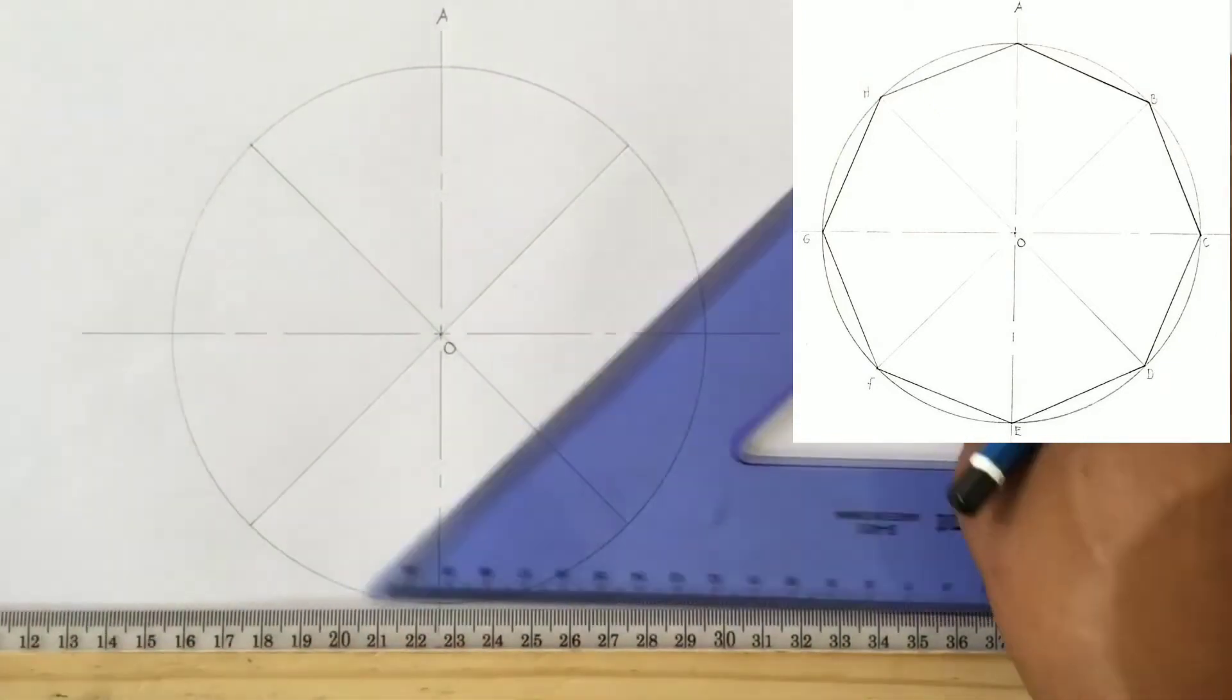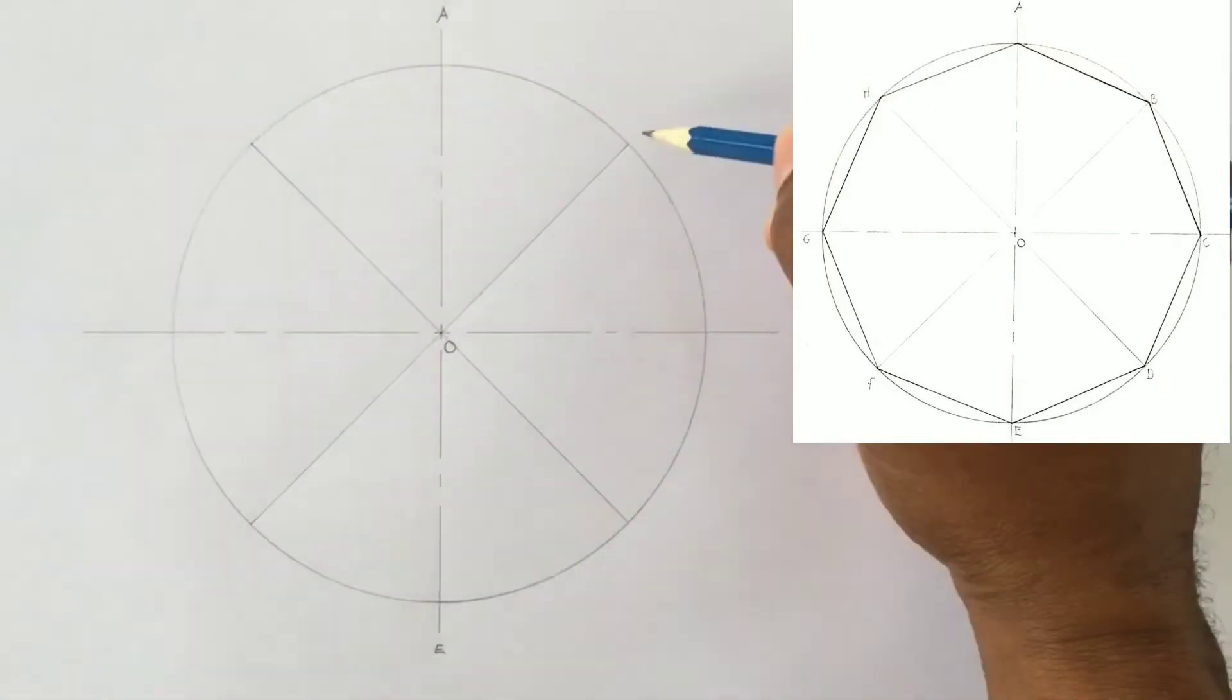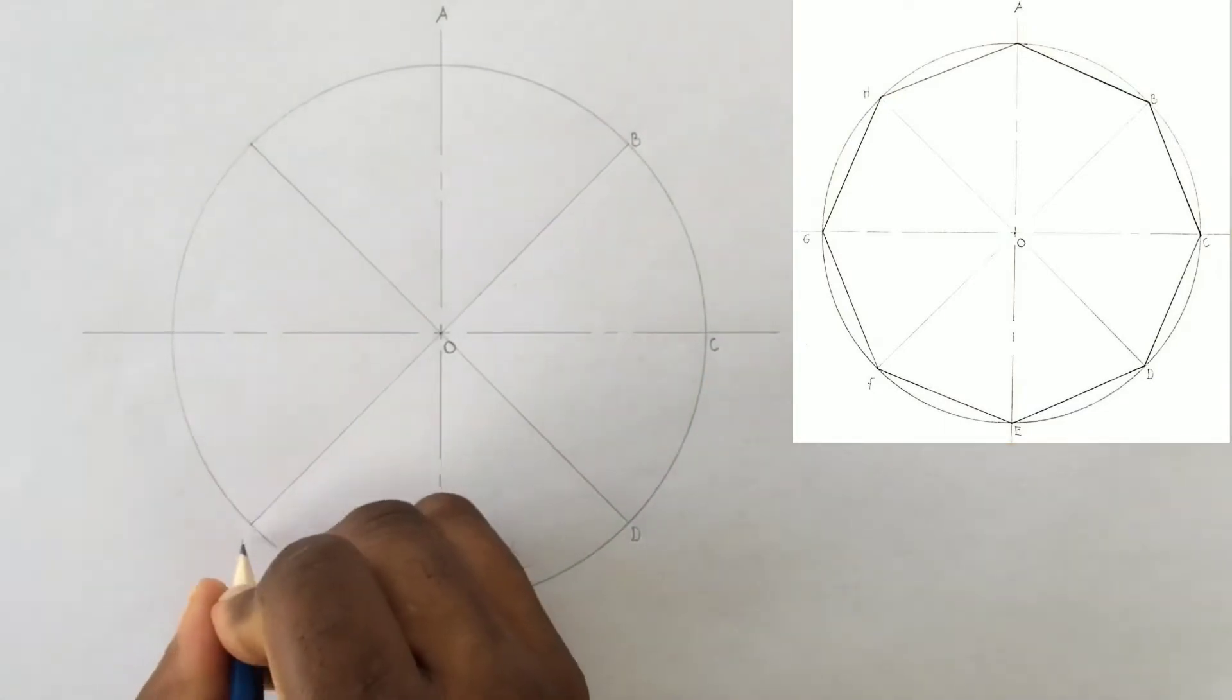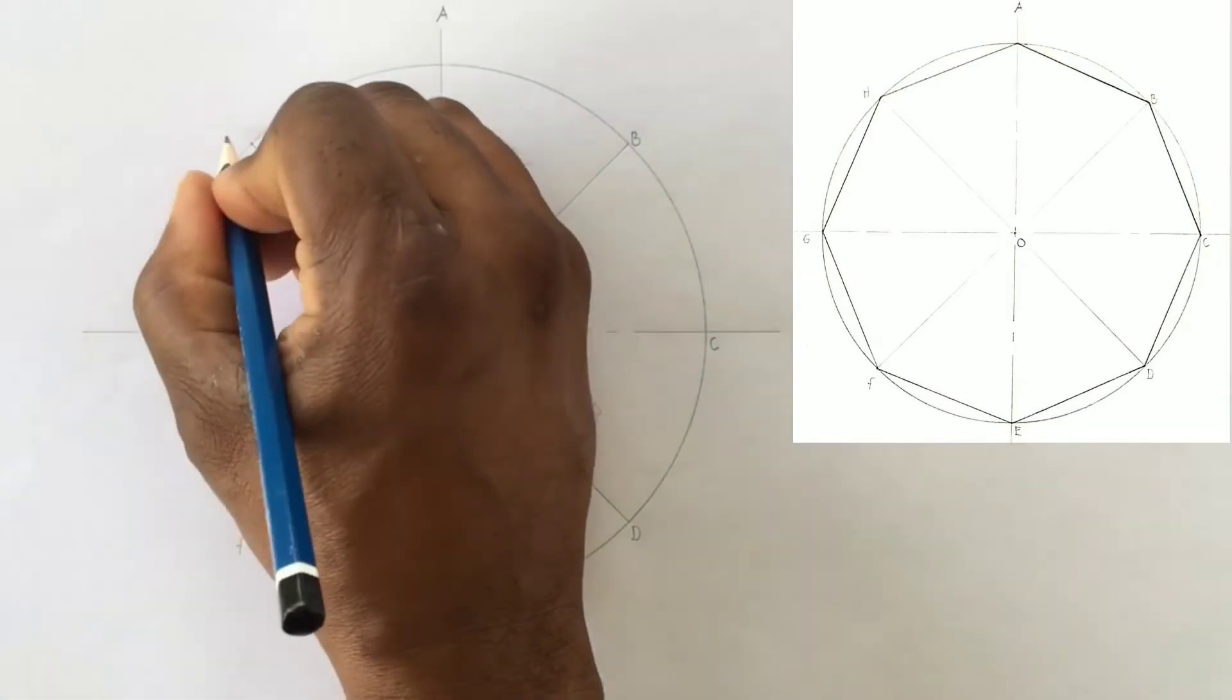We will now label our points B, C, D, F, G, and H.